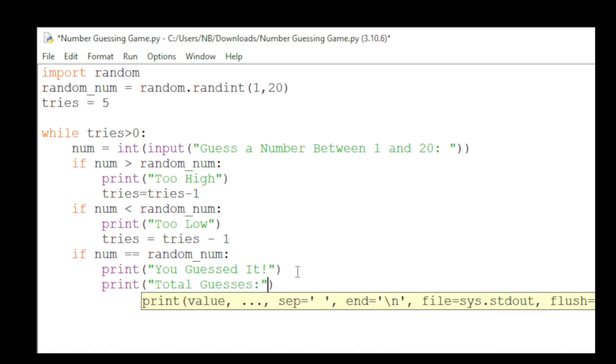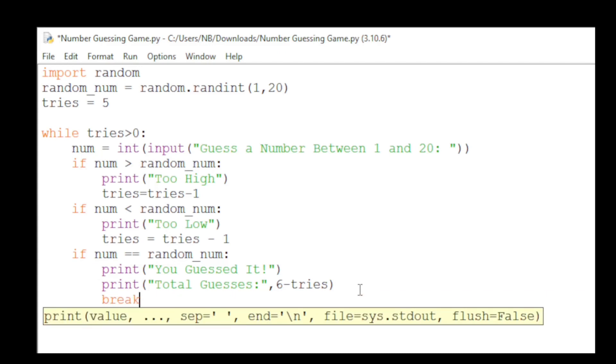And then outside the quotation marks, a comma, 6 minus tries. We use a 6 so we can count the last try. And then after that, we'll have a break statement. This is basically exiting the while loop so it doesn't ask the user to guess another number after you've guessed it.